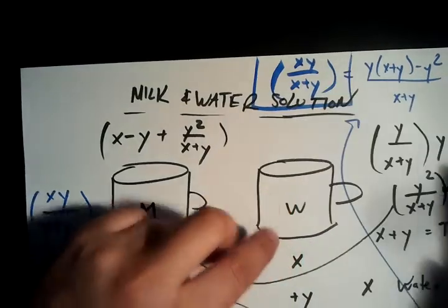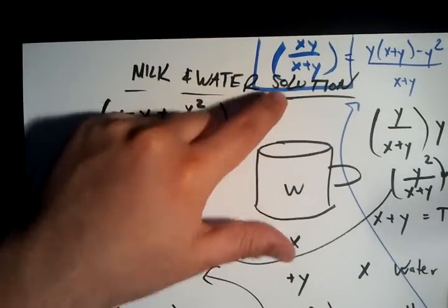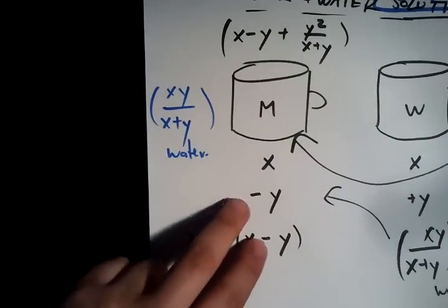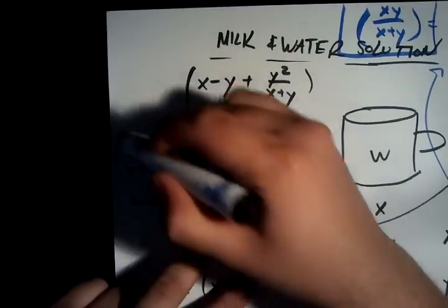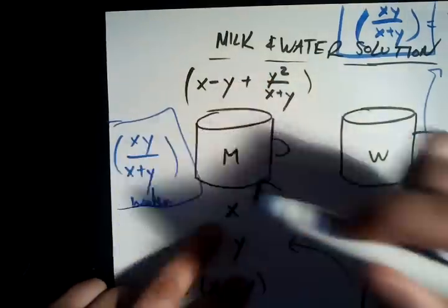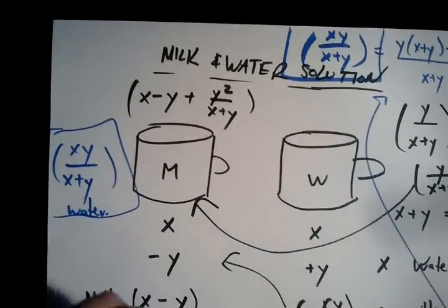So we found that there's xy over x plus y milk in the water jug. And there's xy over x plus y water in the milk jug. So there's in fact equal amounts of both, which seems a little counterintuitive at first.